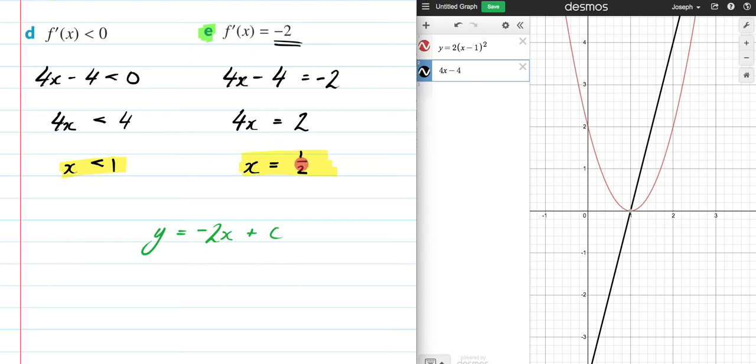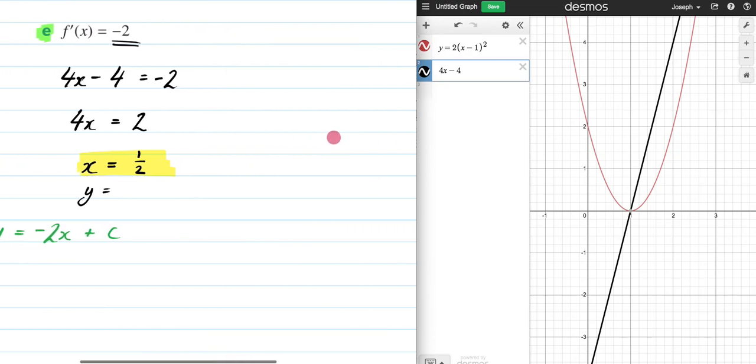So what we need now is the y value that goes along with this. So what is my y going to be when x = 1/2? So I'm going to have to plug that in to y = 2(x-1)^2. So let's just do that for the time being. So it's going to be y = 2(1/2 - 1)^2, which is going to be equal to 2(-1/2)^2.